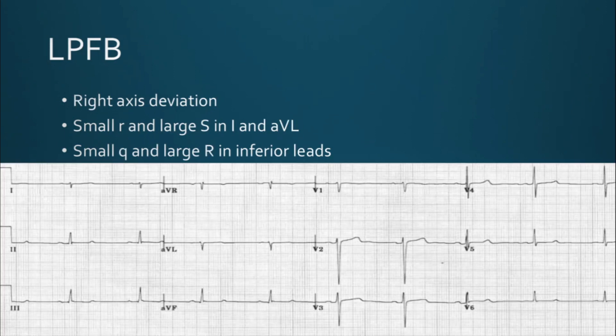The left posterior fascicular block is the exact opposite. You will have right axis deviation: lead I is down, lead AVF is up — your thumbs are heading toward each other, so that's right axis deviation. You'll have a small R wave and large S wave in leads I and AVL, and a small Q wave with a large R wave in the inferior leads. You can see small R, larger S in I and AVL, and a small Q wave with large R waves in the inferior leads. That's your left posterior fascicular block.